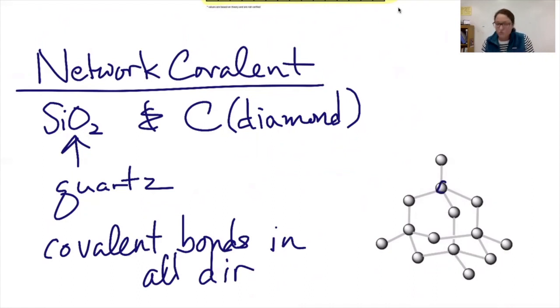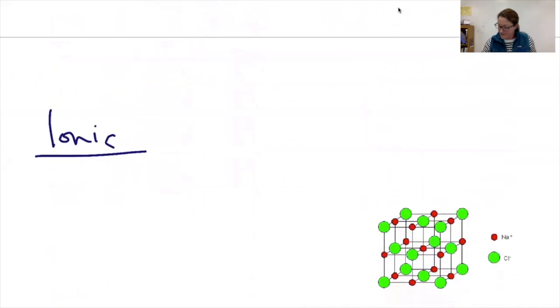So for example, if this was a carbon, that carbon is attached to four other carbons. And each carbon we have is in turn attached to four other carbons. And these strong covalent bonds go through the entire molecule. So this is sometimes also called a giant covalent molecule for that reason. It's one huge molecule. So the two you need to know are SiO2 and pure carbon. If you see SiO2 or pure carbon, assume we mean network covalent.